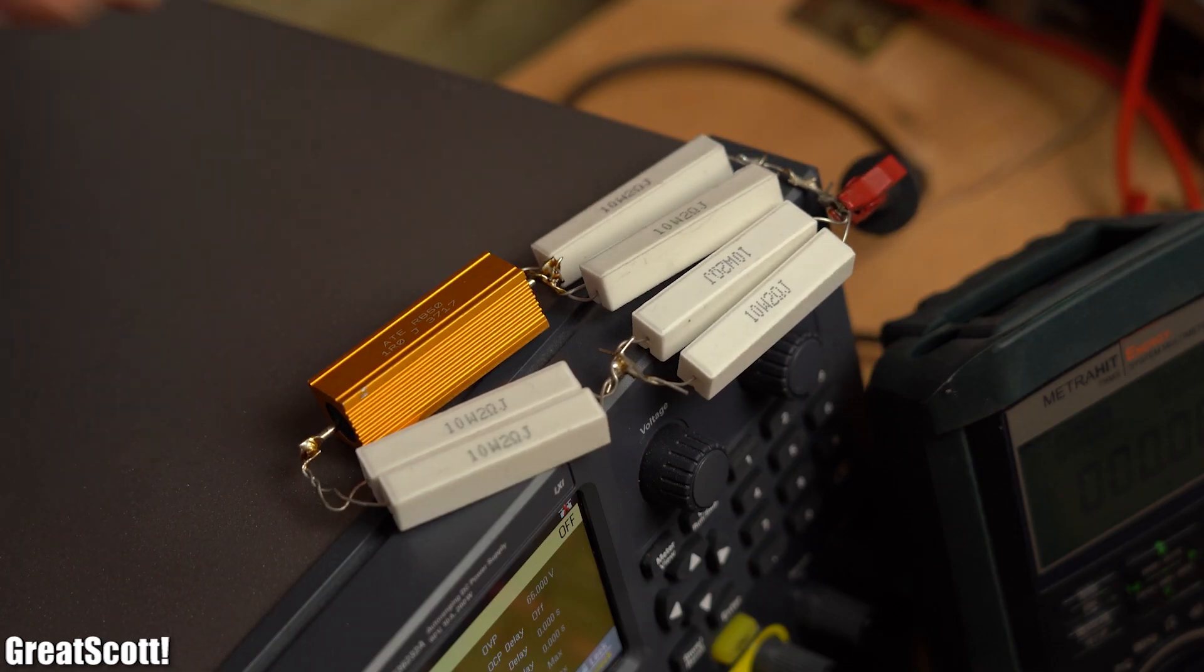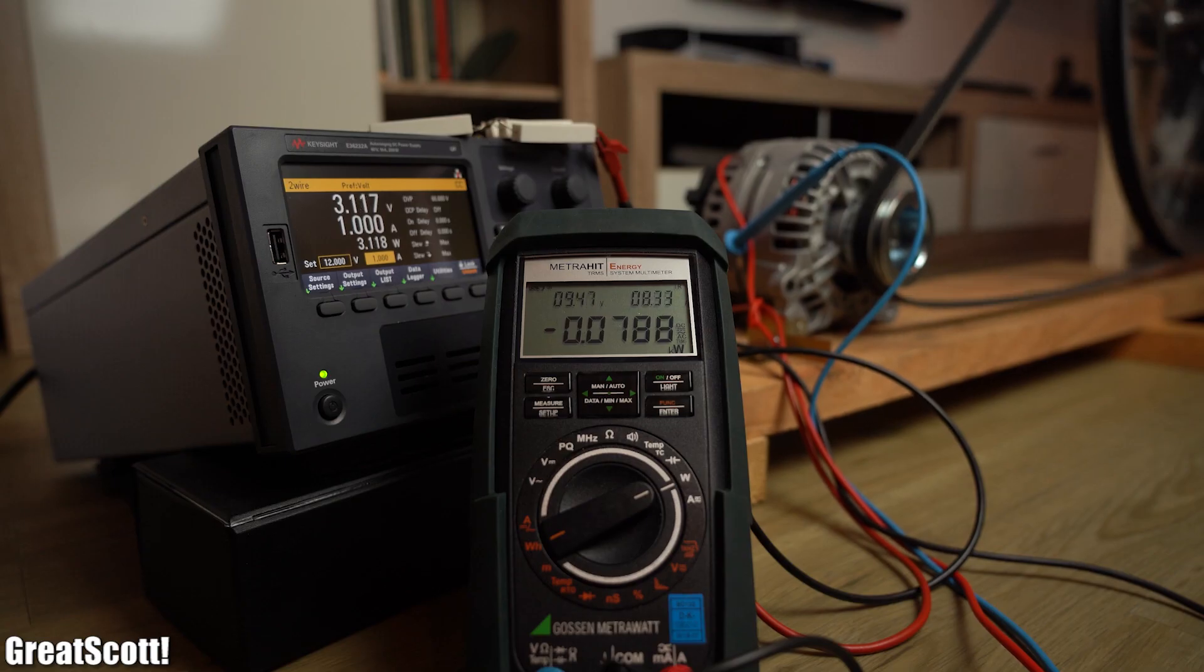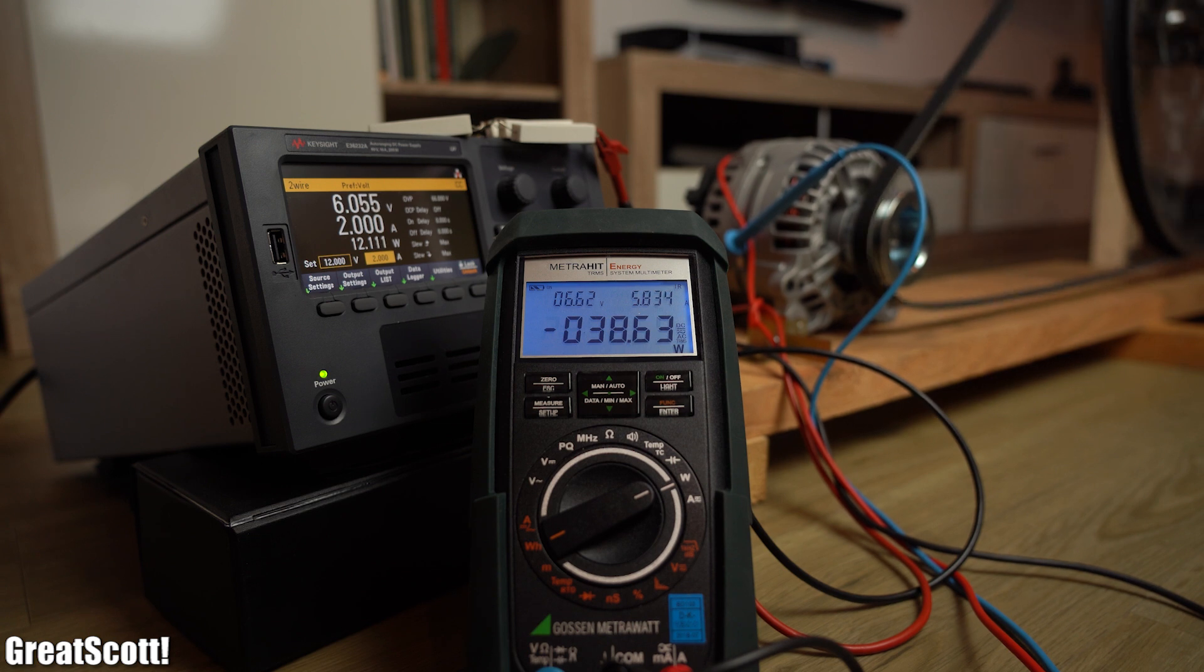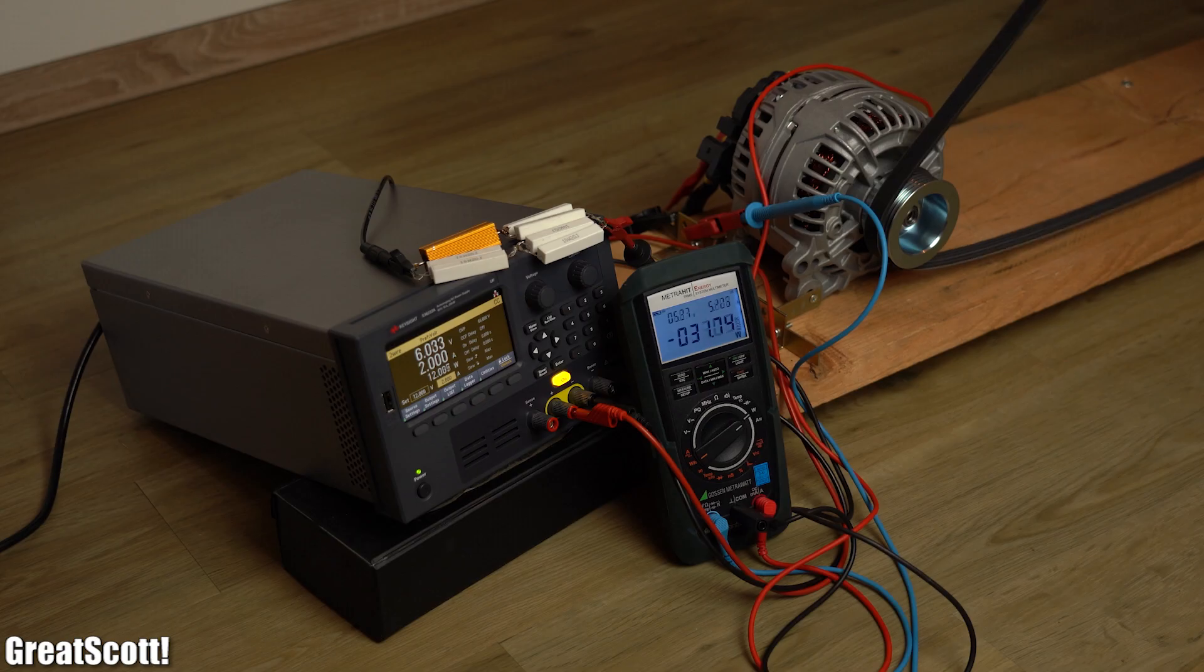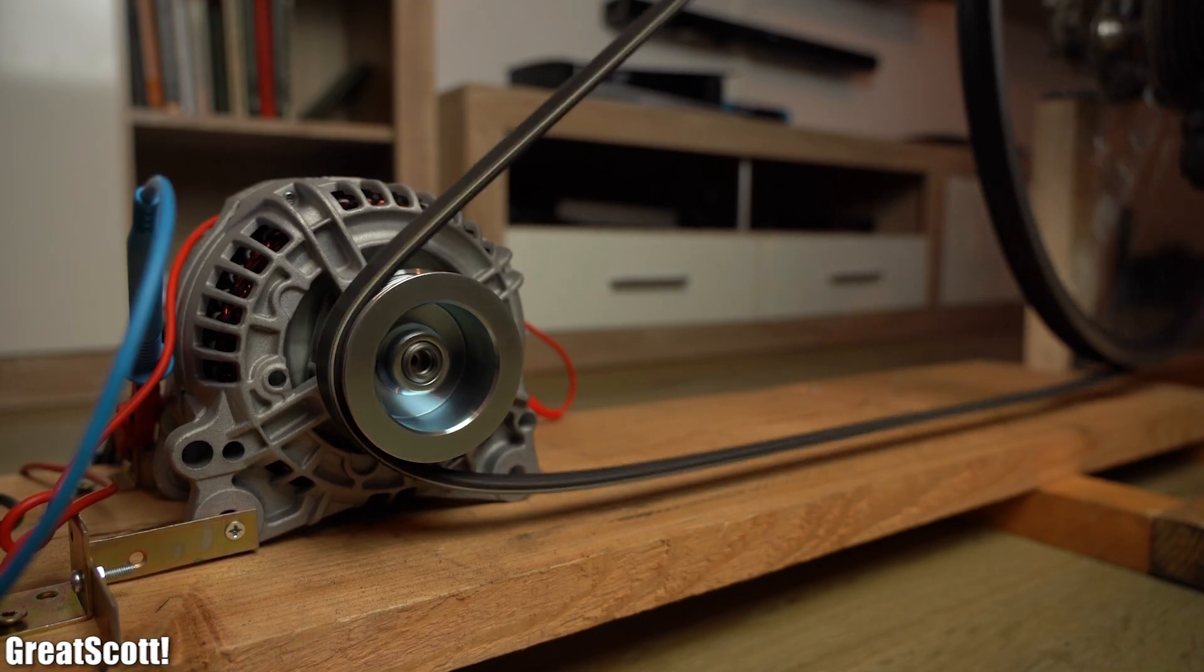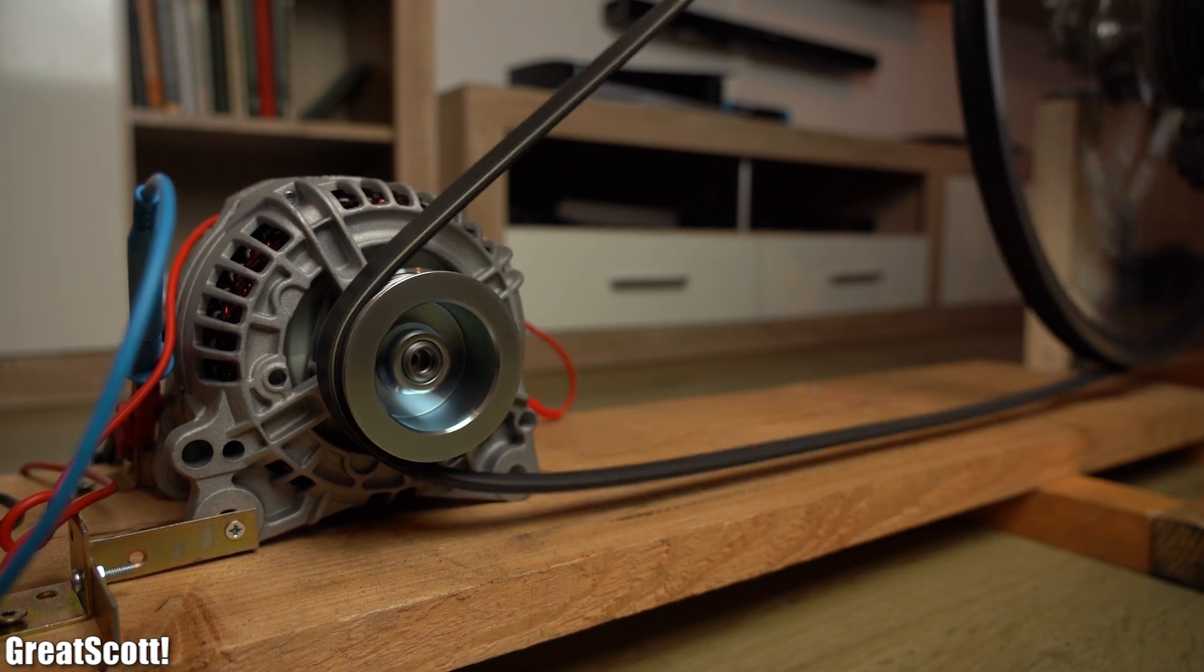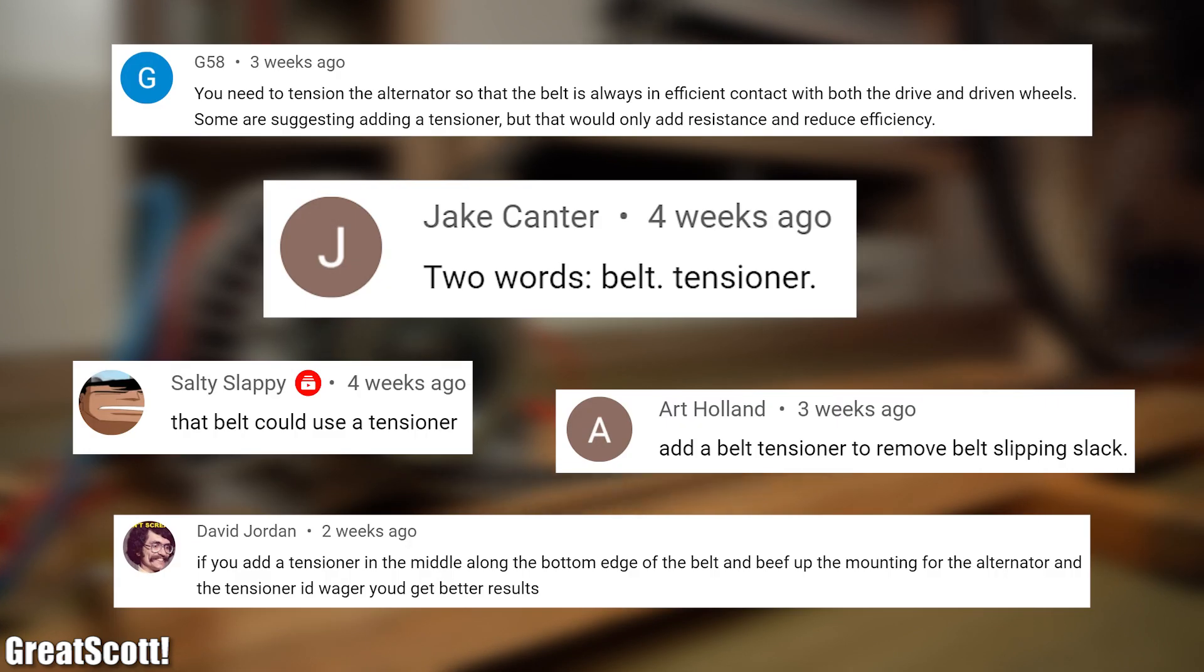So as a replacement load I went with this big 1 ohm resistor, which at an exciter current of 1A heated up with a max power of around 80W, and with an exciter current of 2A it was around 40W. Now normally with a higher exciter current we should be able to generate more power, but the problem of my bike system is that the belt is pretty loose and thus slips. So the comment section suggested that I should create a belt tensioner.